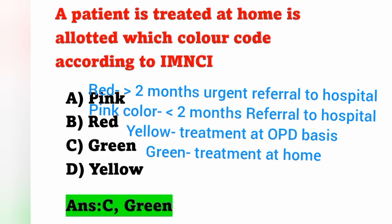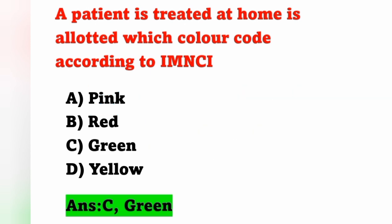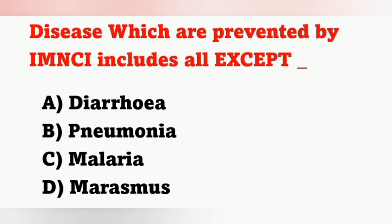The different color codes according to IMNCI: Red indicates a baby greater than two months needing urgent referral to hospital. Pink means a baby less than two months requiring referral to hospital. Yellow means treatment on an OPD basis. Green means treatment at home.